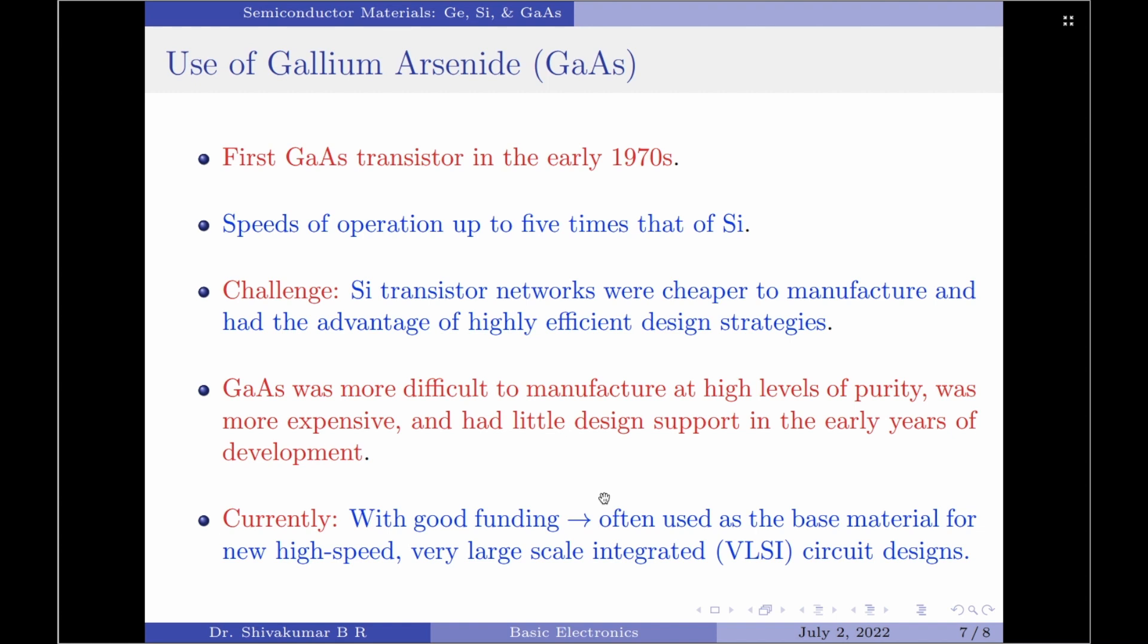However, the demand for increased speed resulted in more funding for gallium arsenide research to the point that today it is often used as the base material for new high-speed very large scale integrated circuit designs.